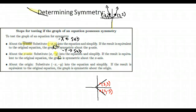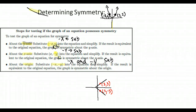If the equation remains unchanged after simplification, it is symmetric with respect to the x-axis. For symmetry with respect to the origin, you change both values — substitute negative x for all x's and negative y for all y's. Simplify as much as possible; if you end up with the same equation you started with, it's symmetric with respect to the origin. So: for the y-axis, sub negative x; for the x-axis, sub negative y; for the origin, sub both negative x and negative y.